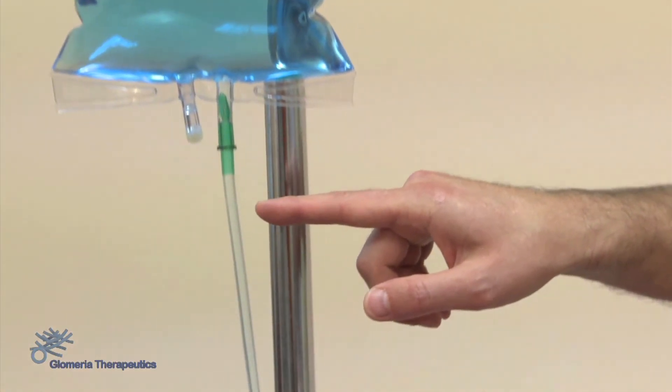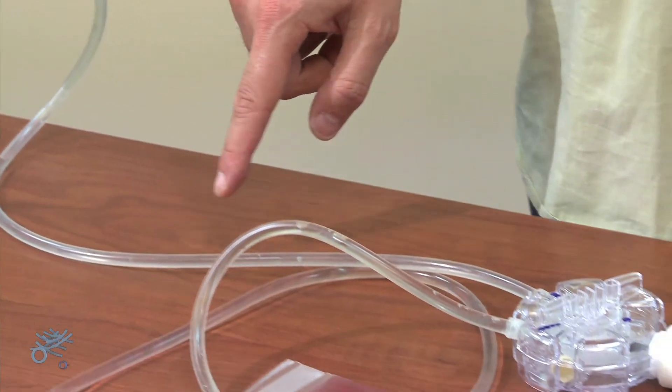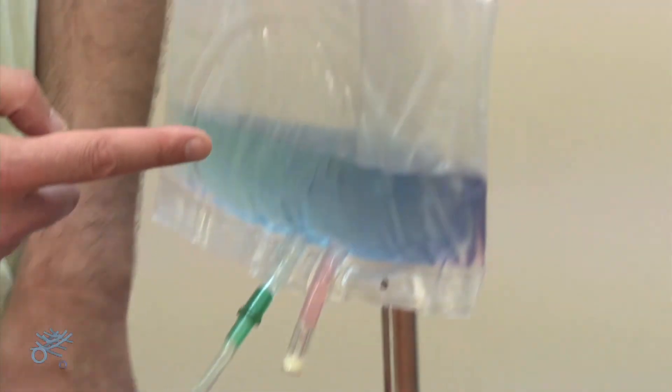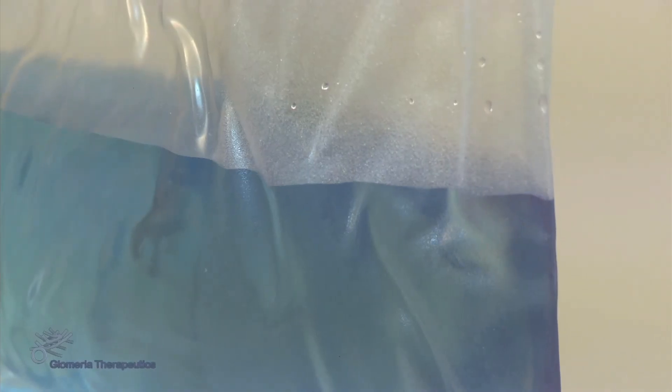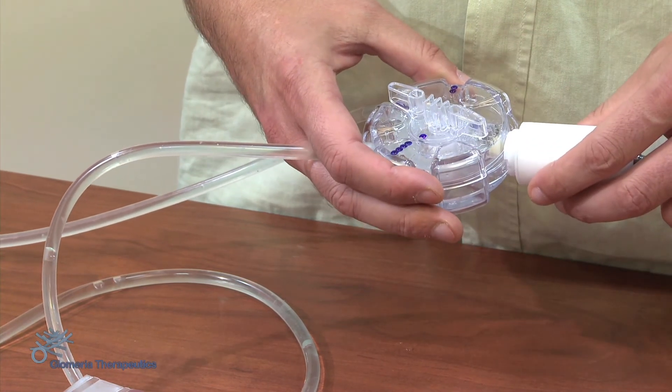The liquid begins to flow into the new peritoneum bag. At the end of the emptying phase, we turn the valve of the Desmo connector to the position denoted by four blue circles.